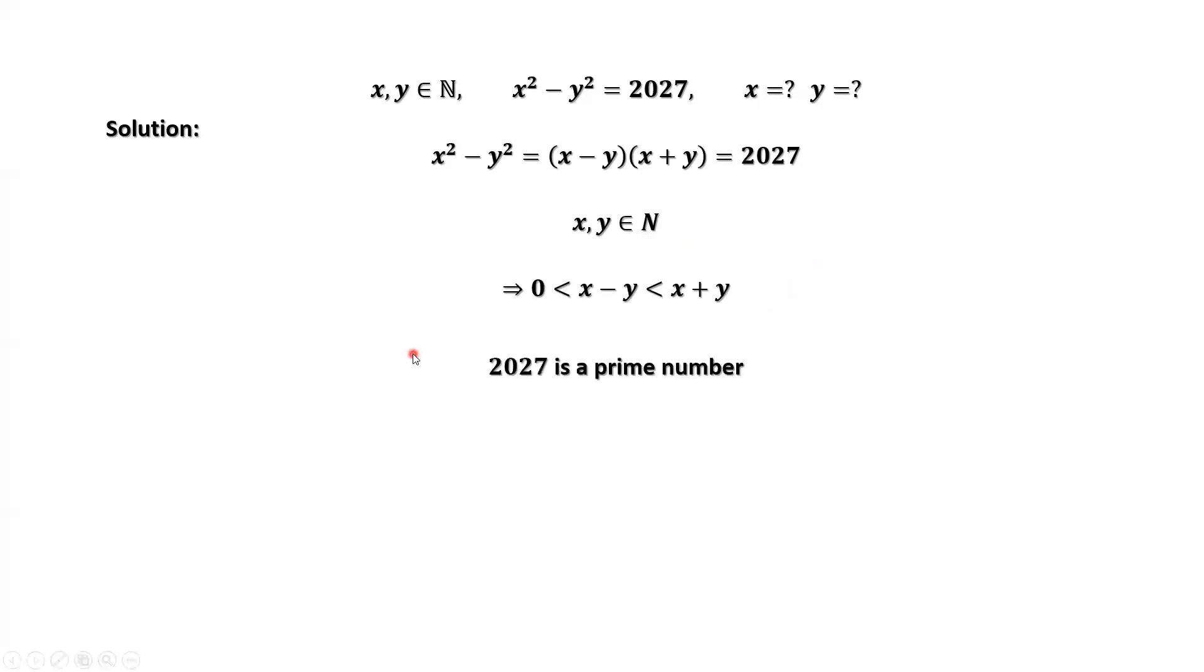Here is the important information. 2027 is a prime number. What does that mean? This means 2027 only has two factors, one and 2027.